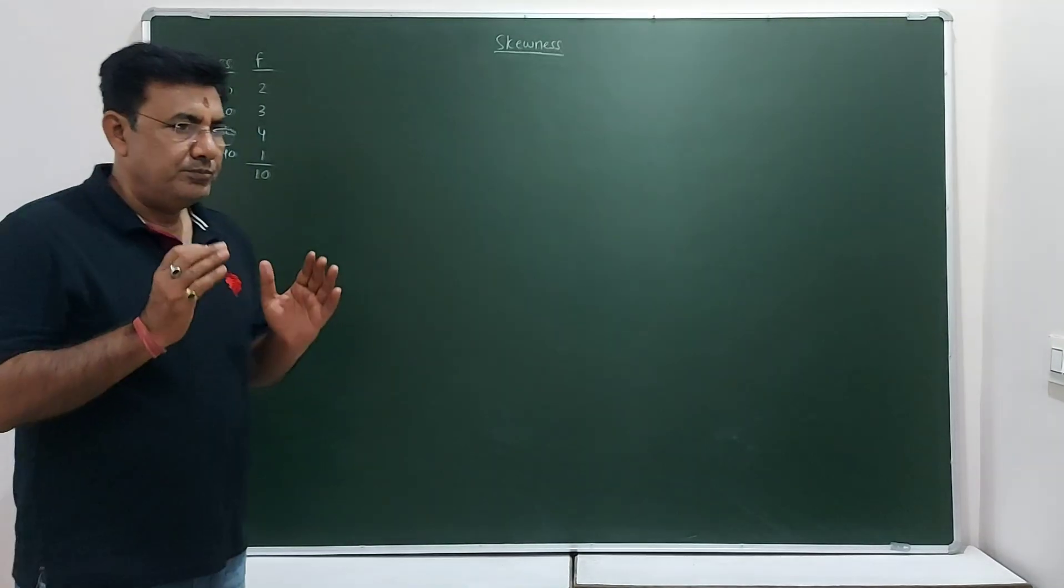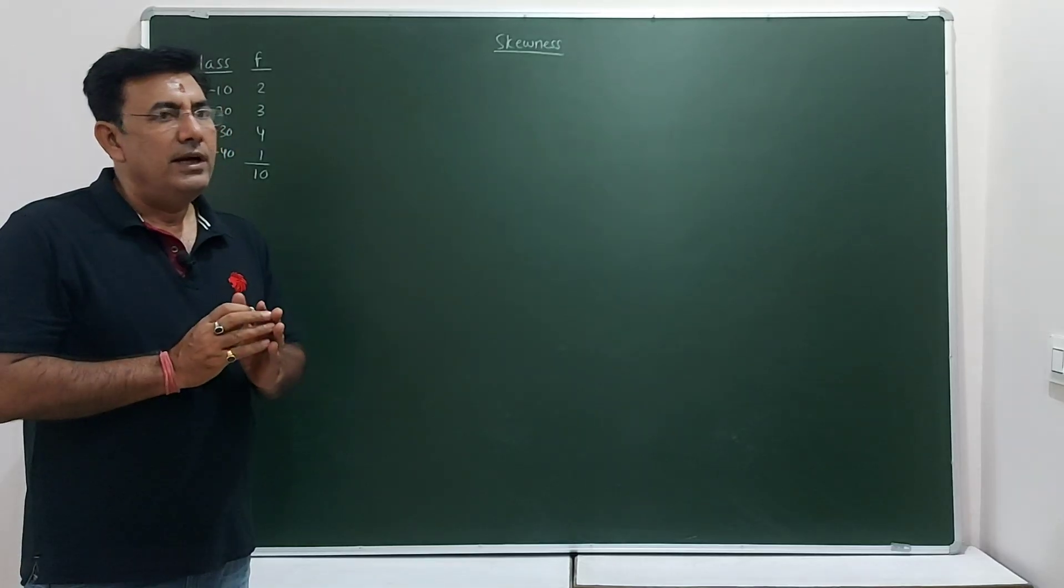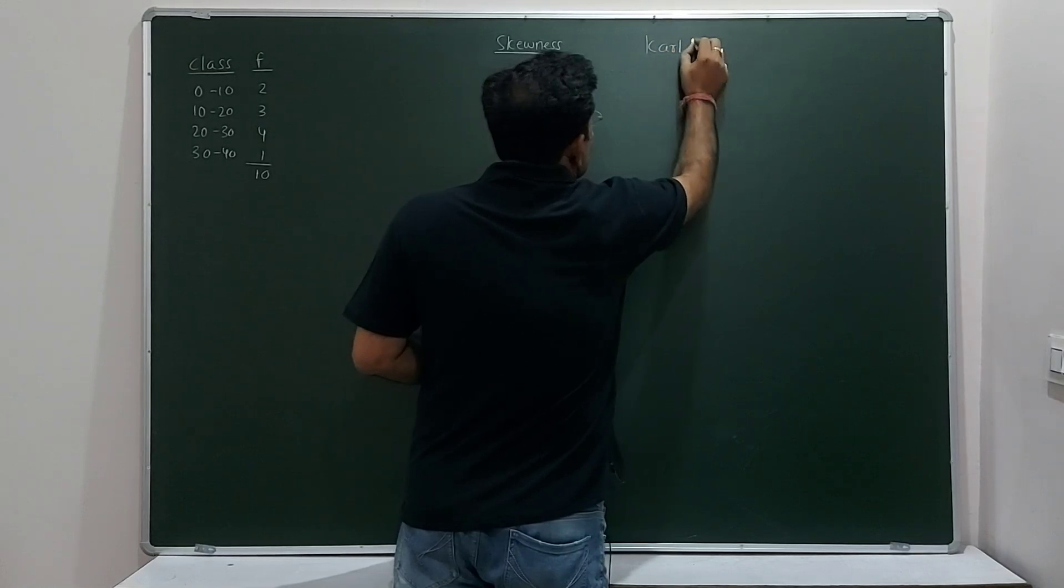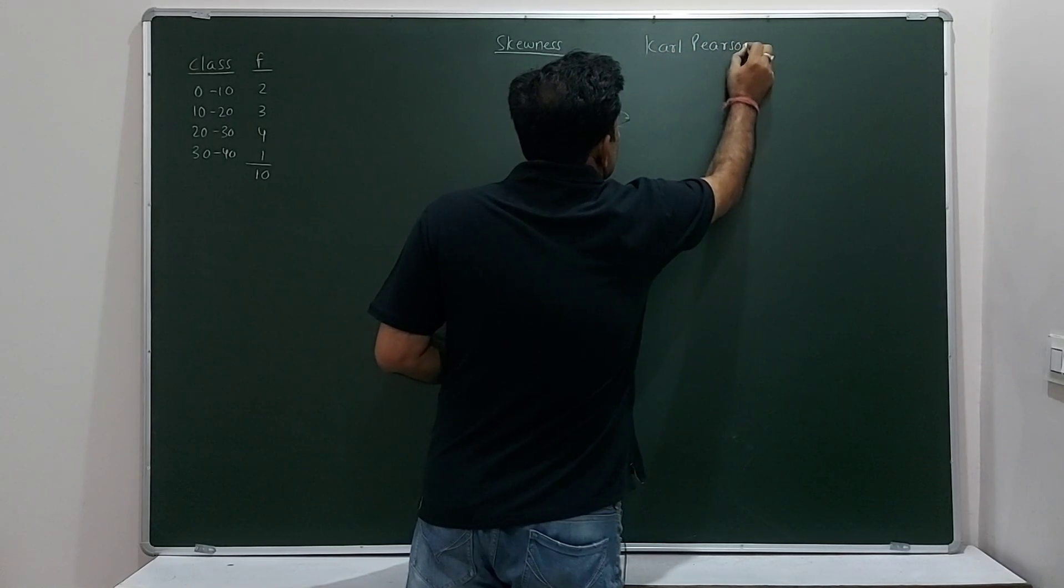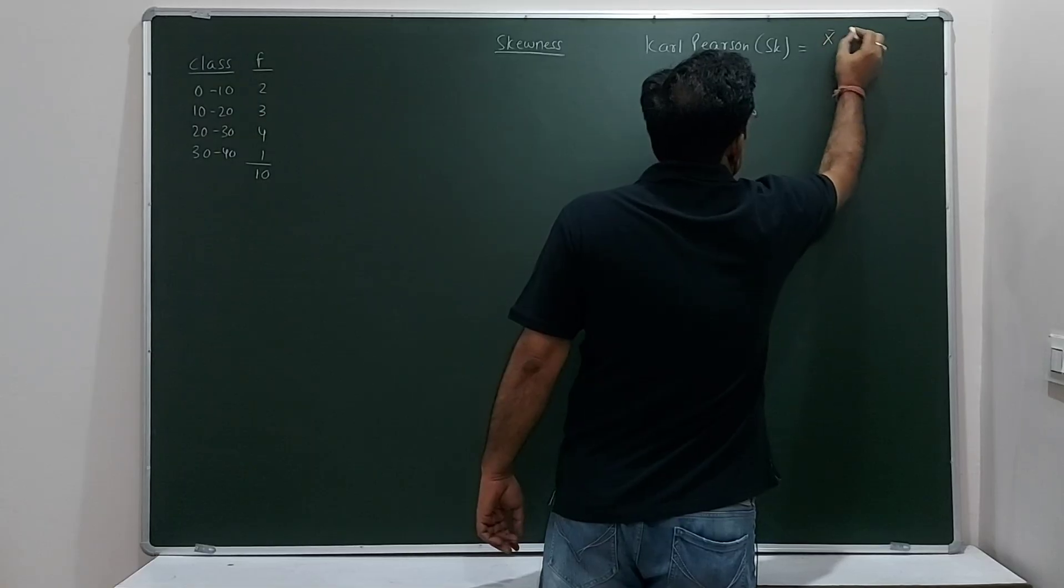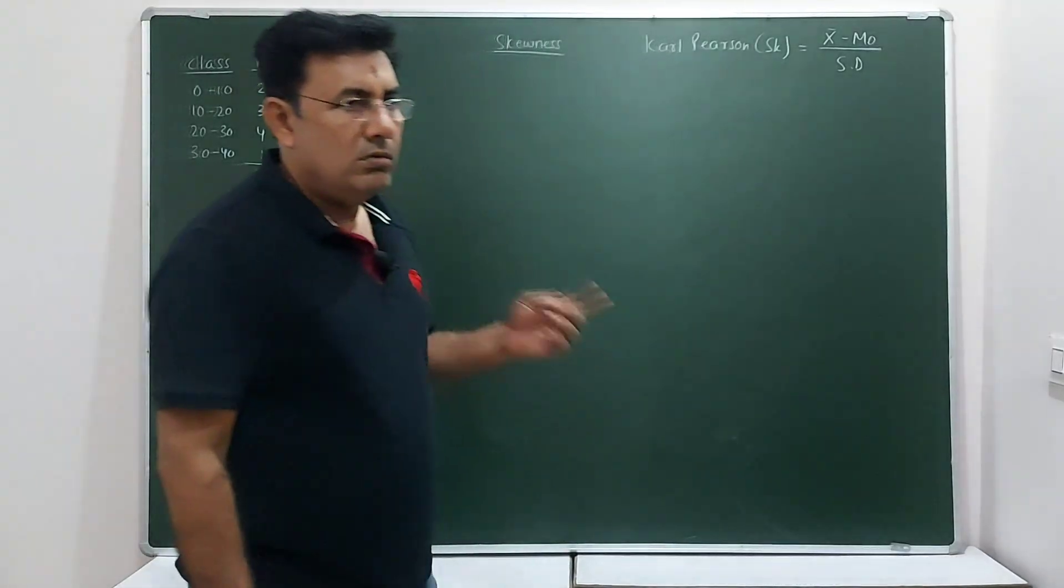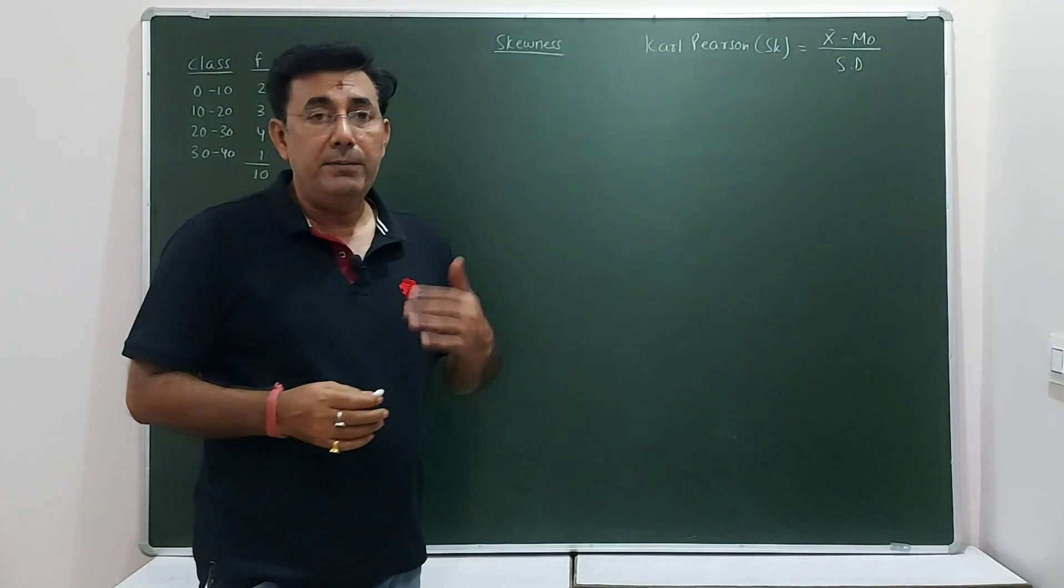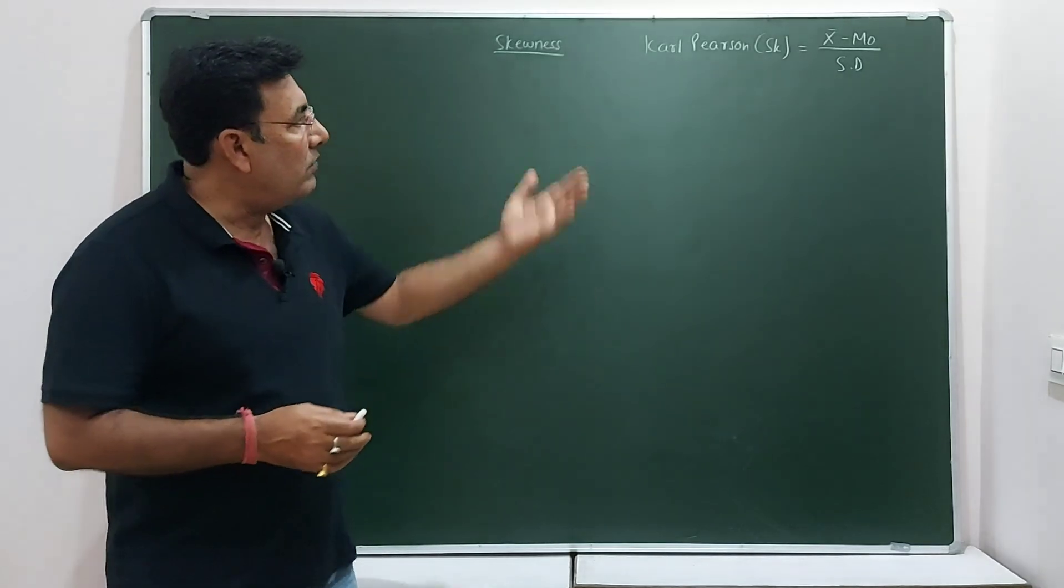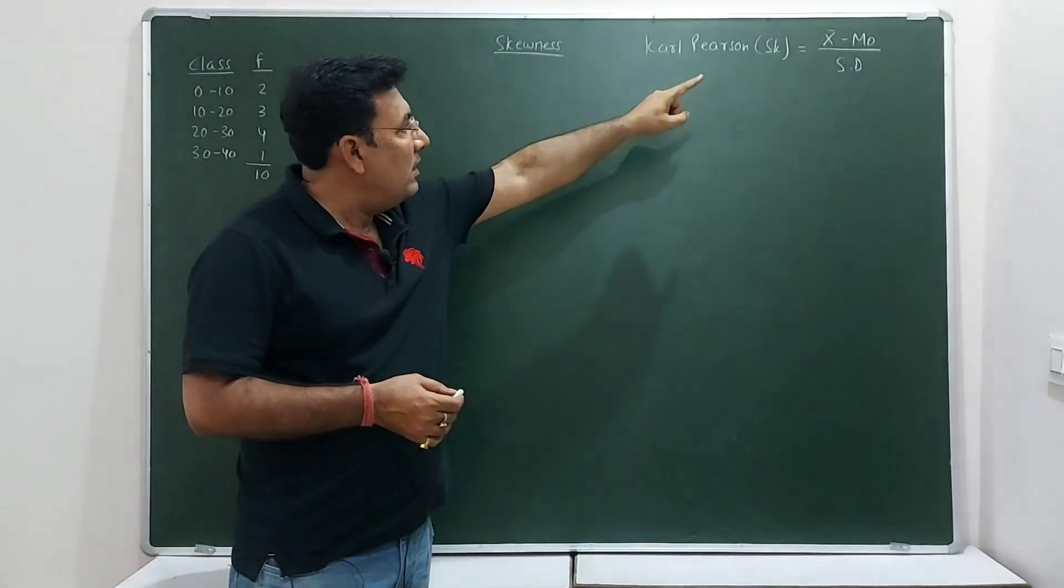Now we are to find the skewness by using Carl Pearson. If the class is closed, there is no open end, then we will use Carl Pearson formula. This is the formula: Carl Pearson of finding skewness. The formula is mean minus mode divided by standard deviation. The students who do not know how to find mean, how to find mode and standard deviation, you will also get to know how to find all these statistical averages. Now first of all, because we have to use this formula, so first find mean.